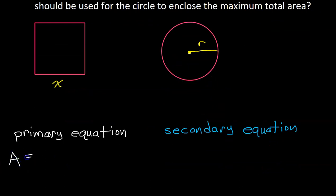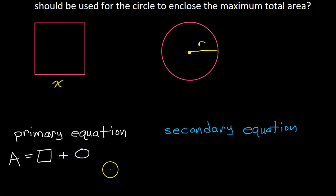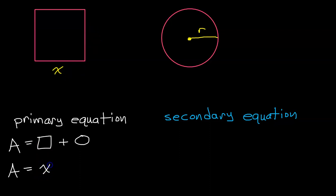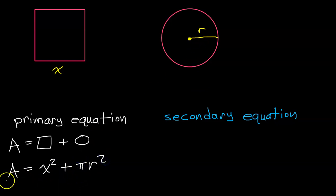The total area equals the area of the square plus the area of the circle. The area of the square will just be x squared — base times height. The area of the circle, of course, is pi r squared. So this is the primary equation.